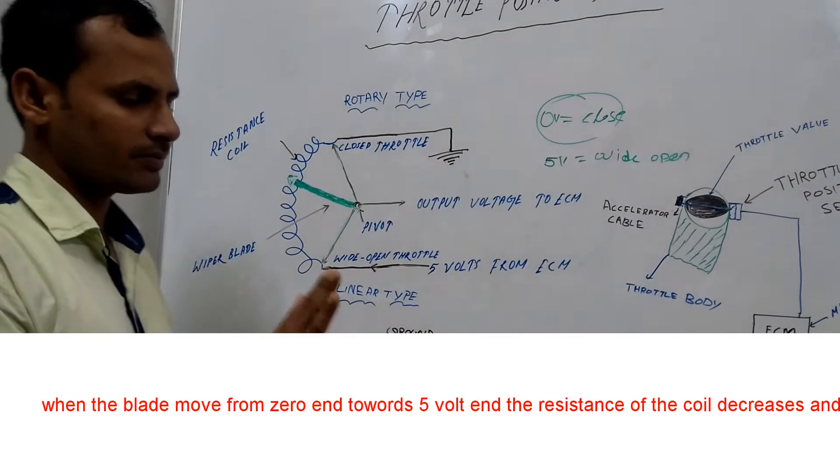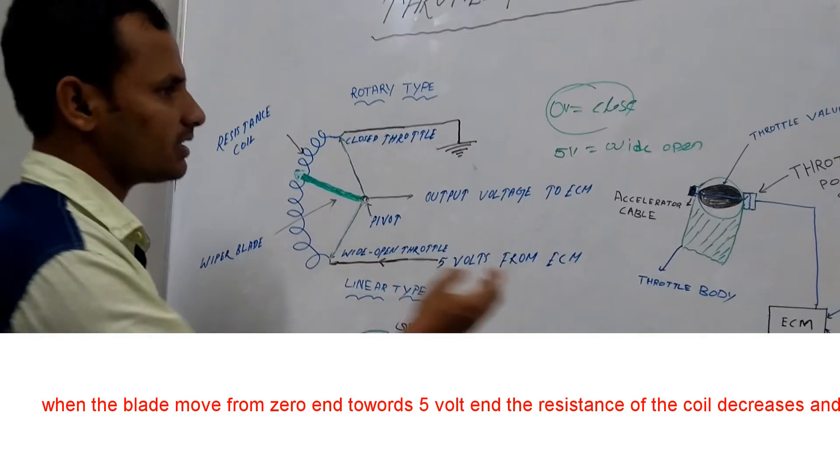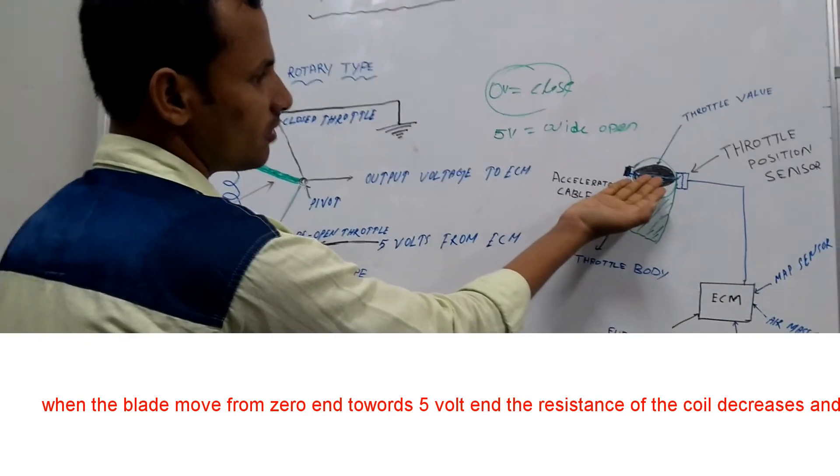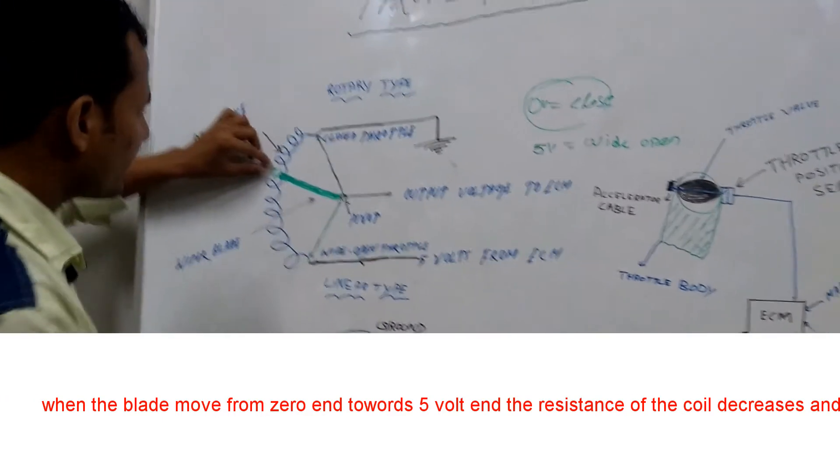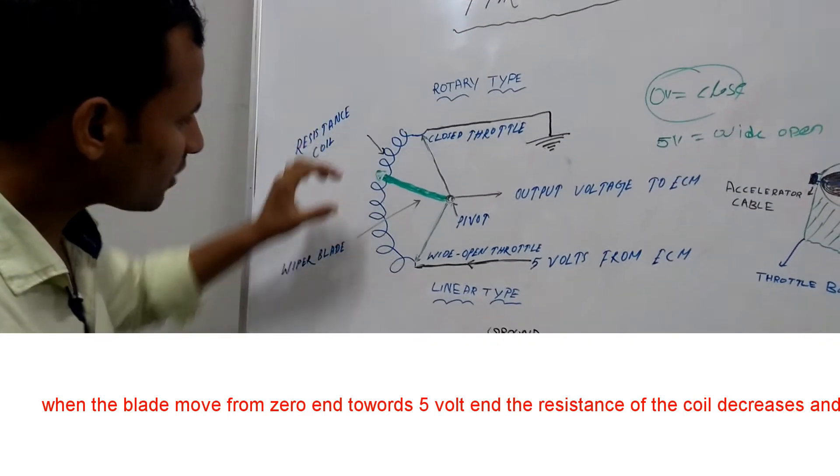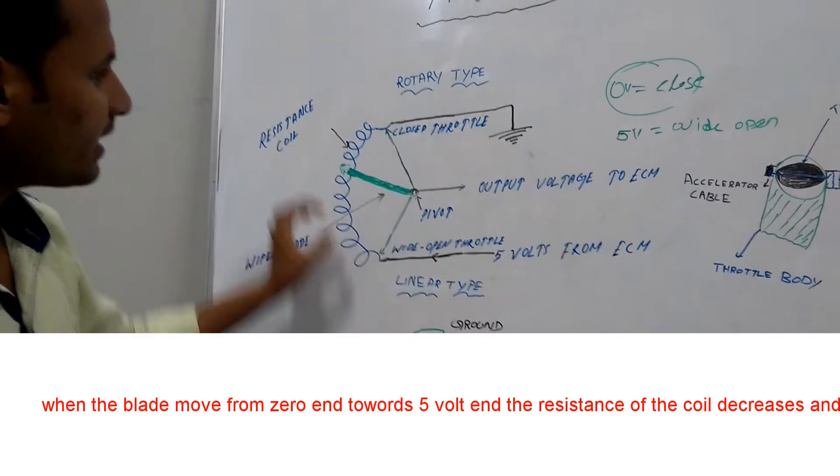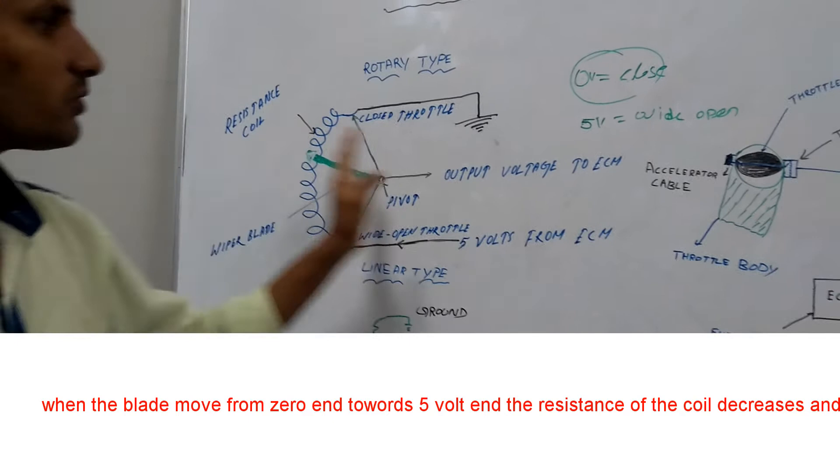When the throttle valve depresses the pedal and the throttle valve opens, the blade or wiper blade moves from the 0 end towards the 5 volt end and supplies a voltage to the ECM.